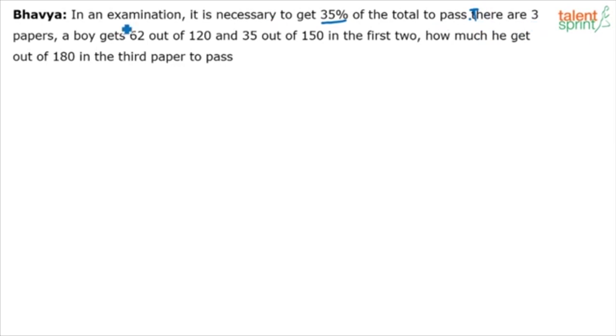There are three papers. A boy gets 62 out of 120 in the first one and 35 out of 150 in the second one, in the first two papers. Now, how much he has to get in the third out of 180 so that he can pass? How much should he get in the third out of 180 so that he can pass?